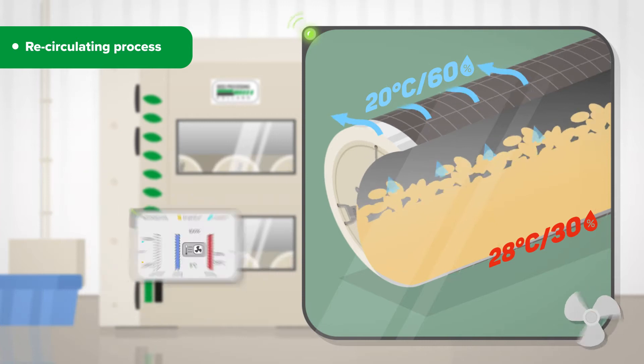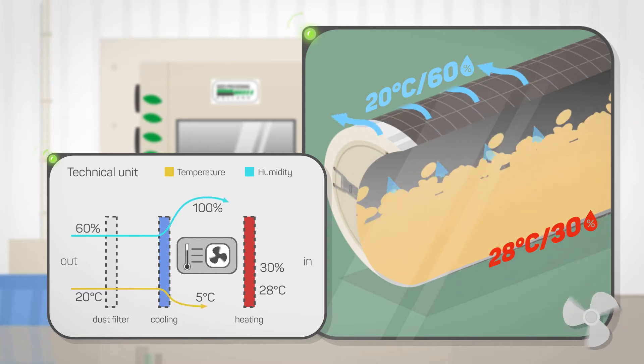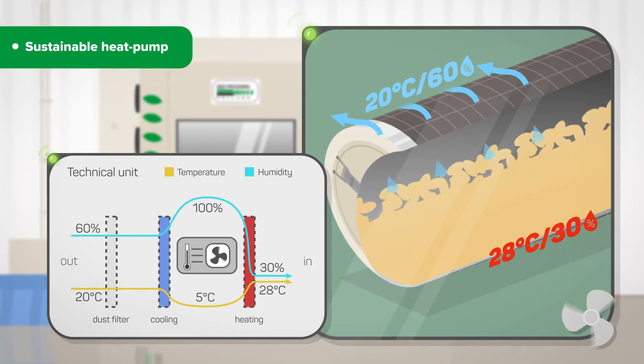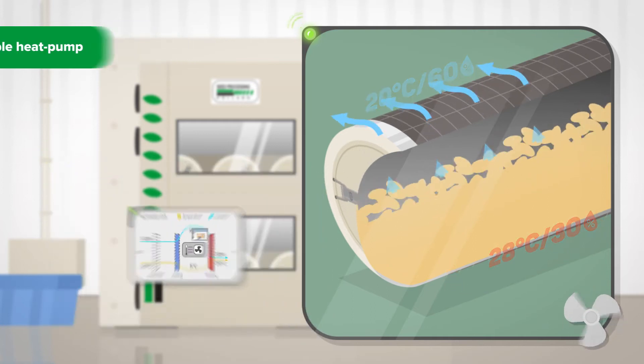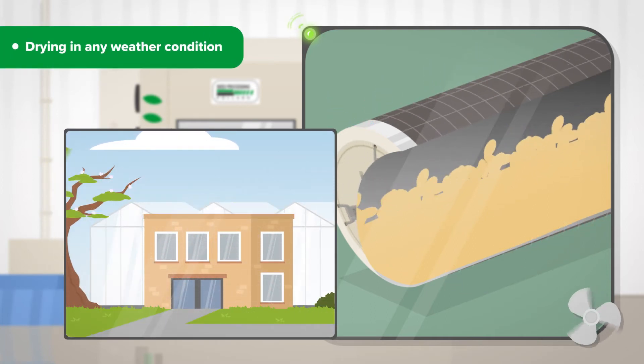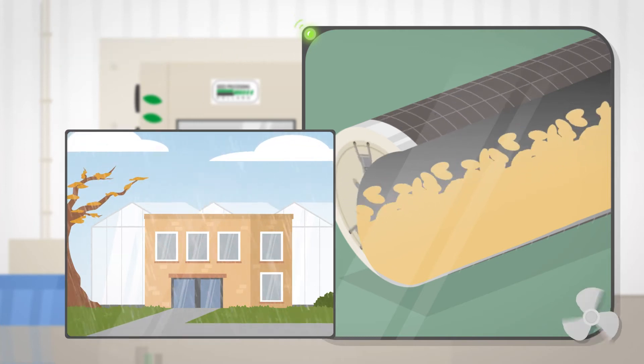In a recirculating process, dry air is blown through the seeds, taking up water vapor, passing a dust filter. In the technical unit, air is cooled down, water extracted, reheated, and returned again to the seeds, all by using sustainable heat pump technology. Independent of any ambient weather condition, your seeds will be dried safely, exactly according to your drying protocols.